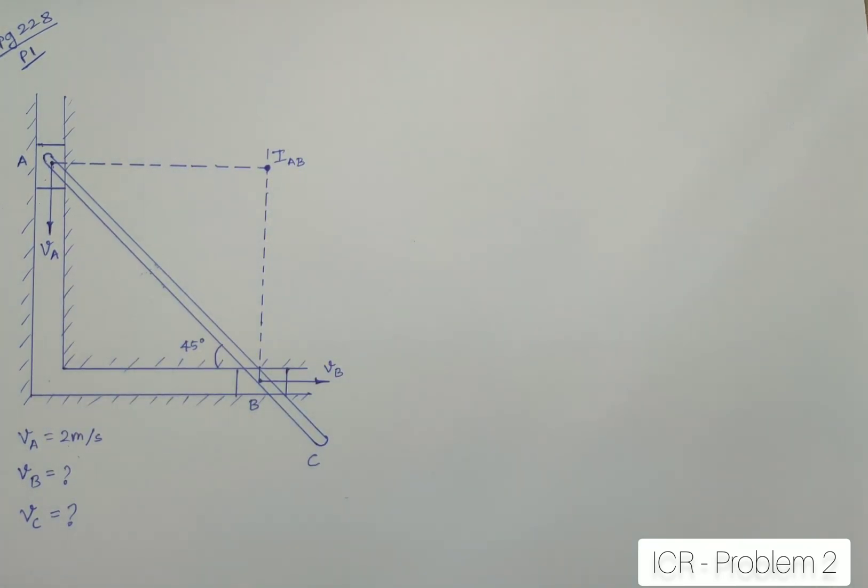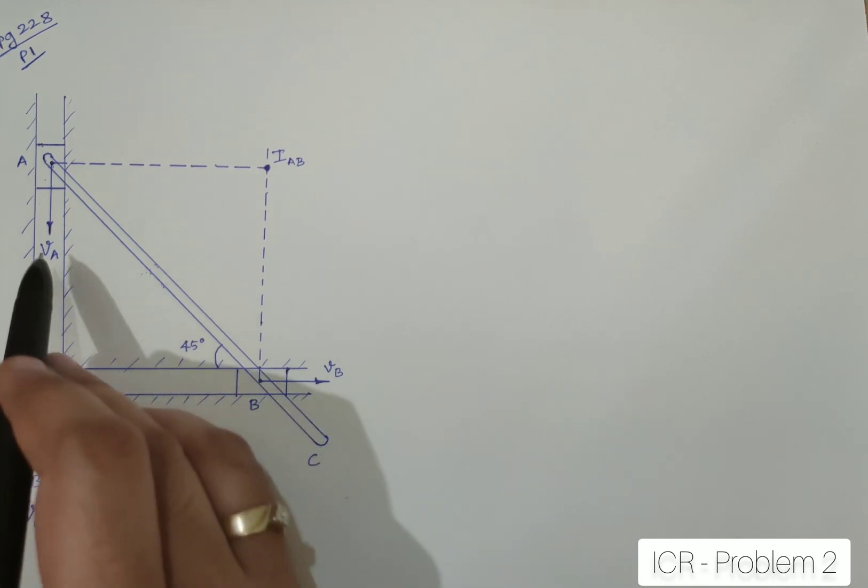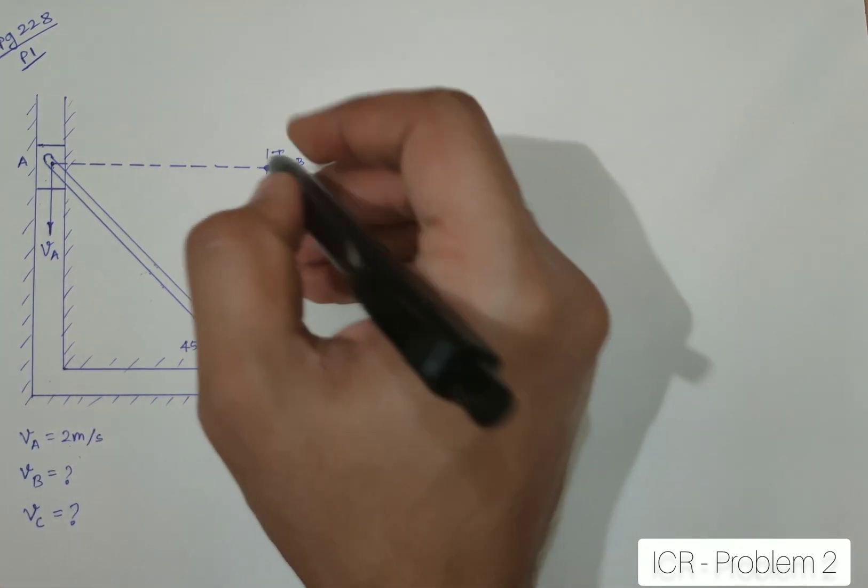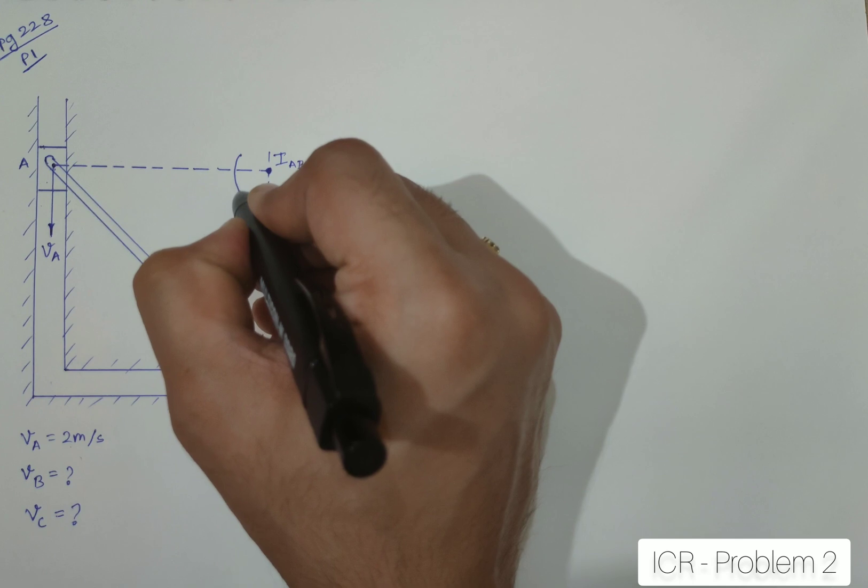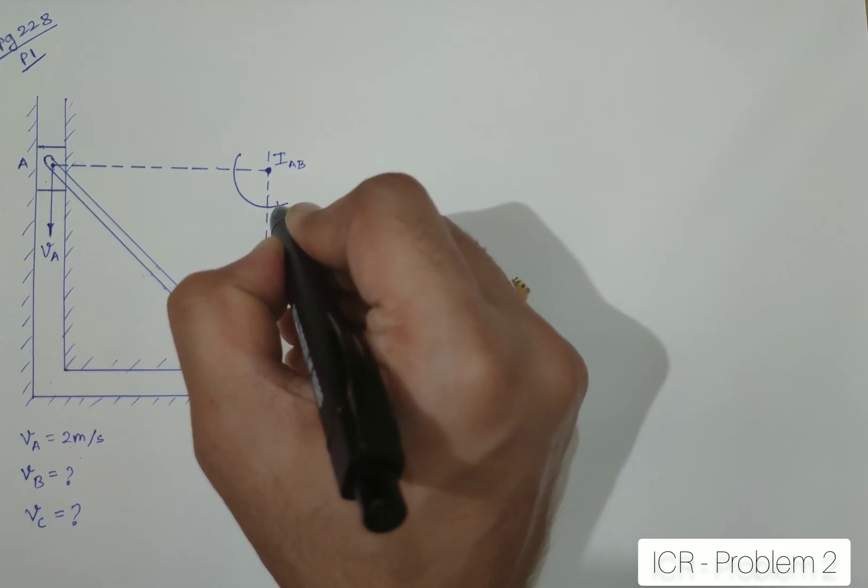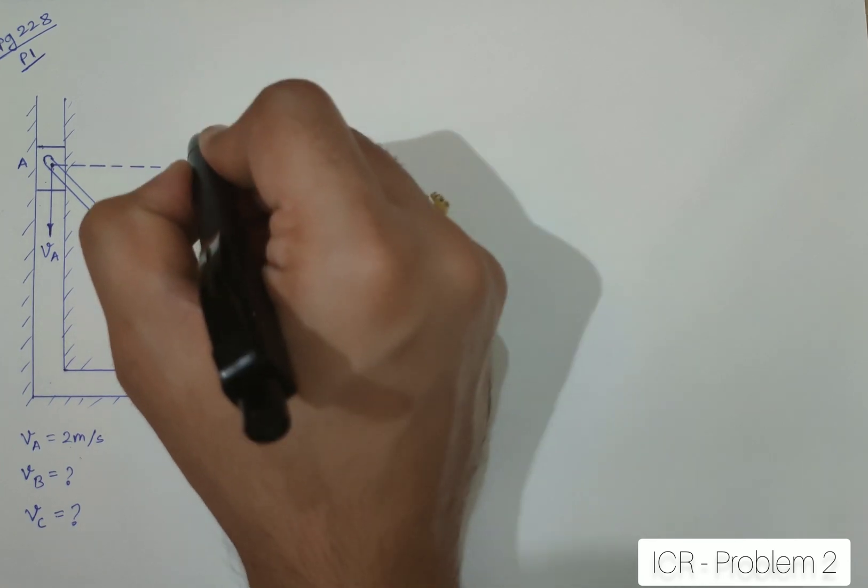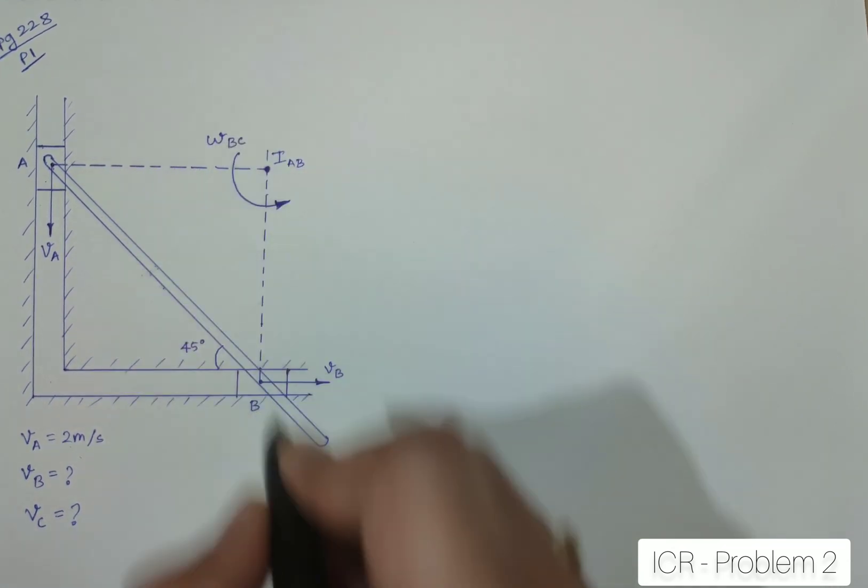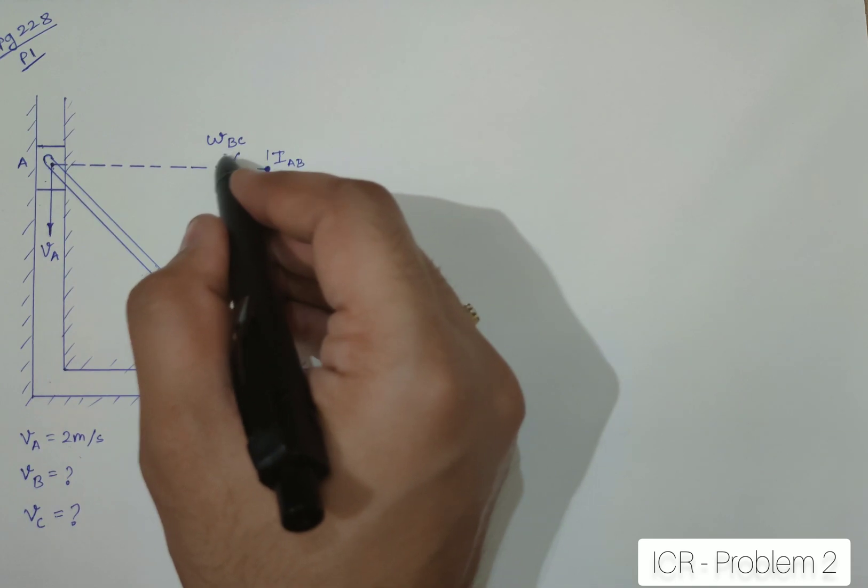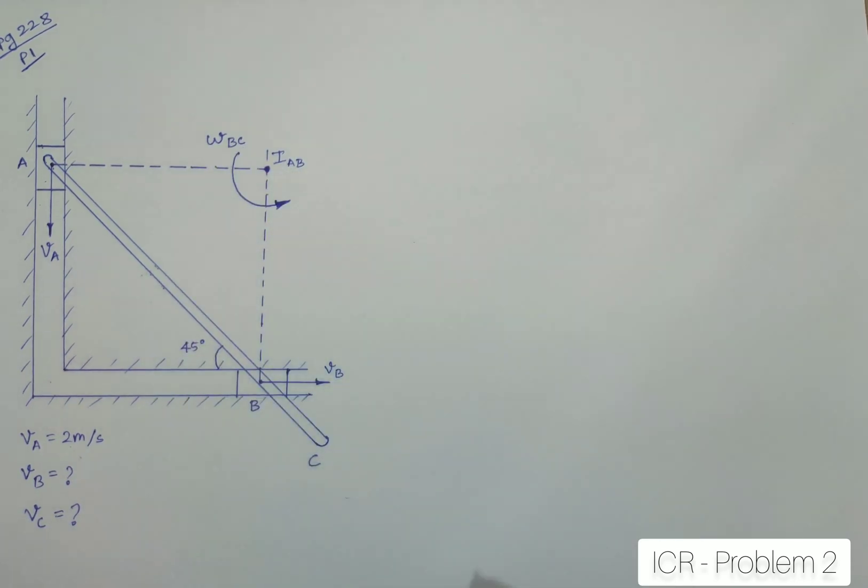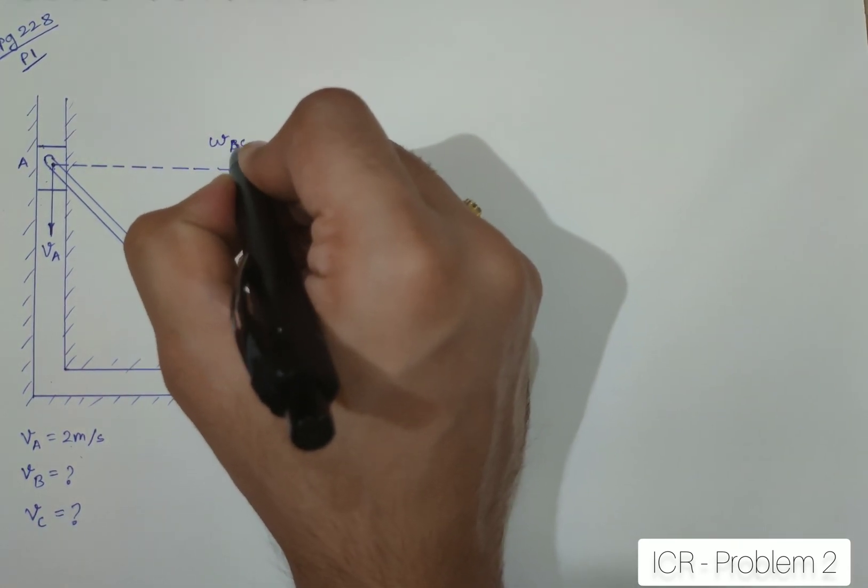Now, I want to find out VB using the value of VA. So, can I get the relationship in between them? Yes, we can. We have to just imagine, or we have to understand that, my entire link AB is rotating along this point IAB. Let me give this link velocity omega AC, I should write it.